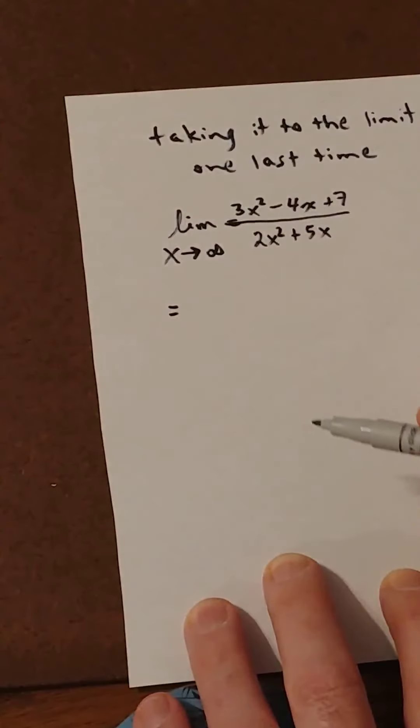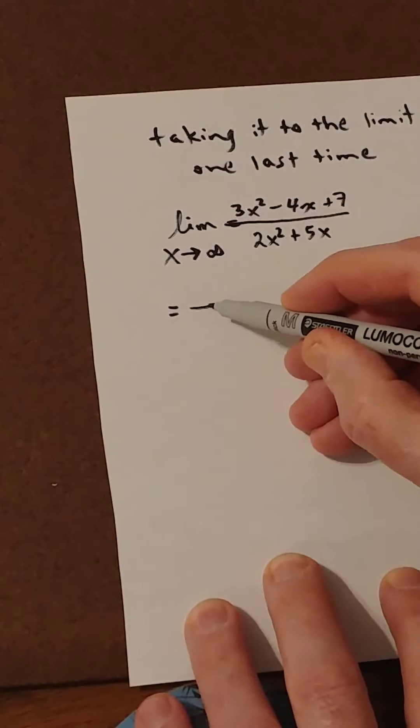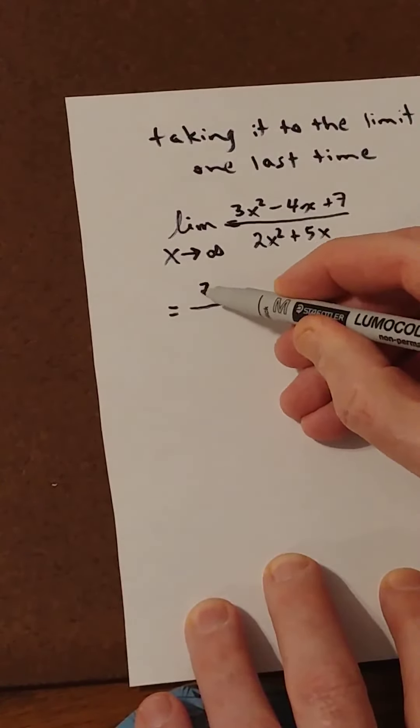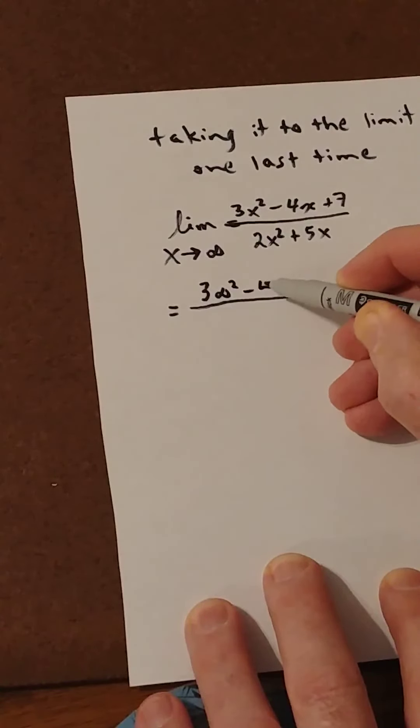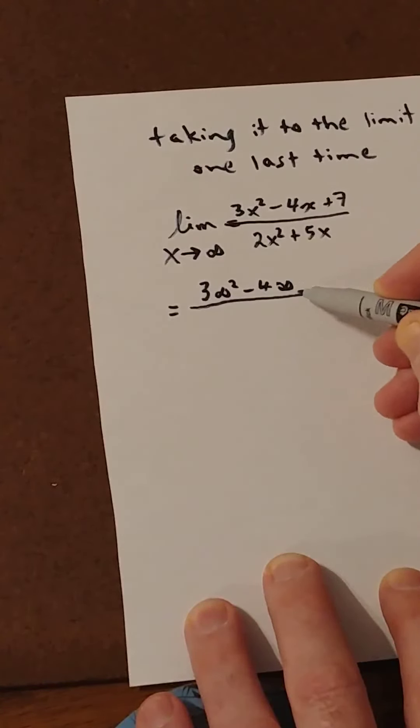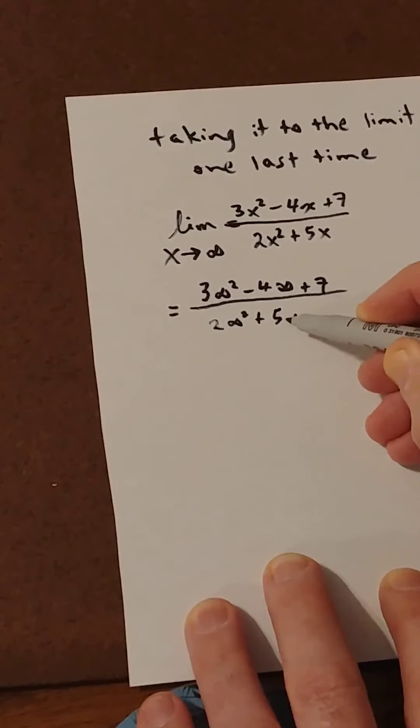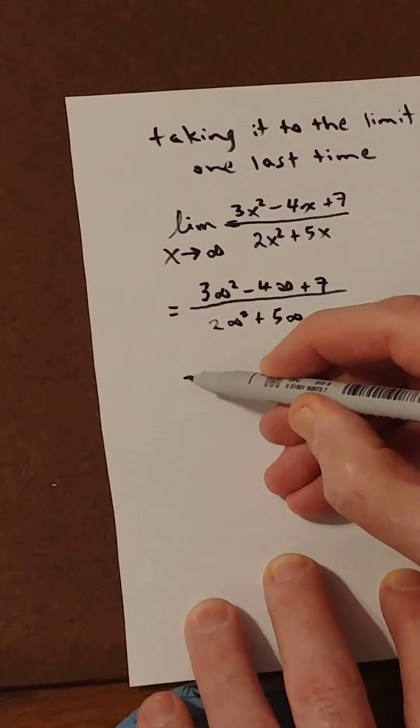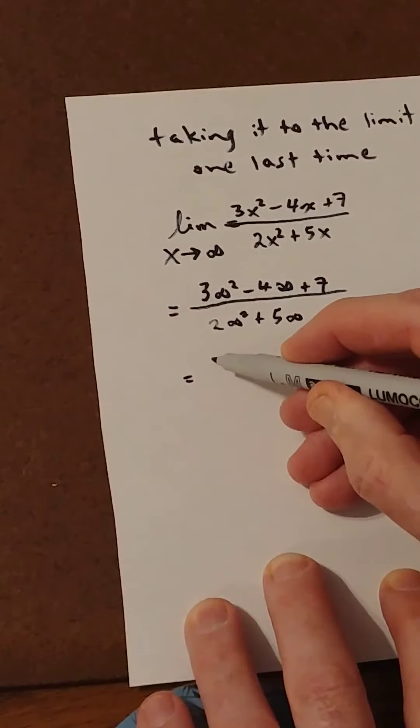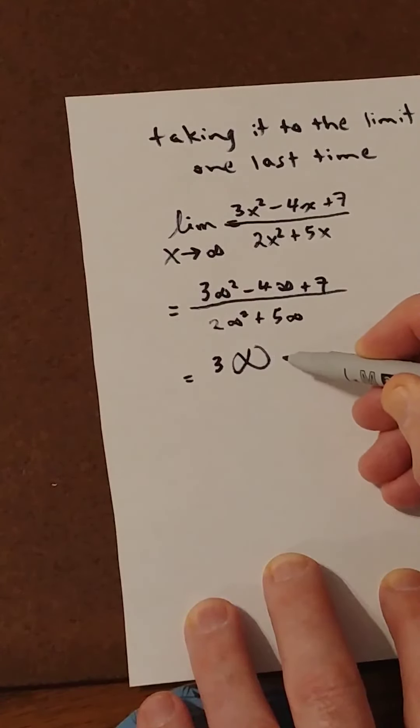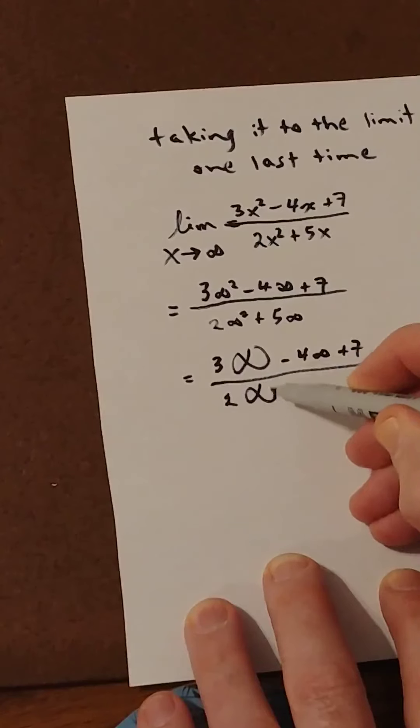By plugging in infinity, you get 3 times infinity squared minus 4 times infinity plus 7 over 2 times infinity squared plus 5 times infinity. Well, of course, infinity squared is much bigger than infinity, so that's 3 times a really big infinity, minus 4 times infinity plus 7 over 2 times that really big infinity plus 5 times infinity.